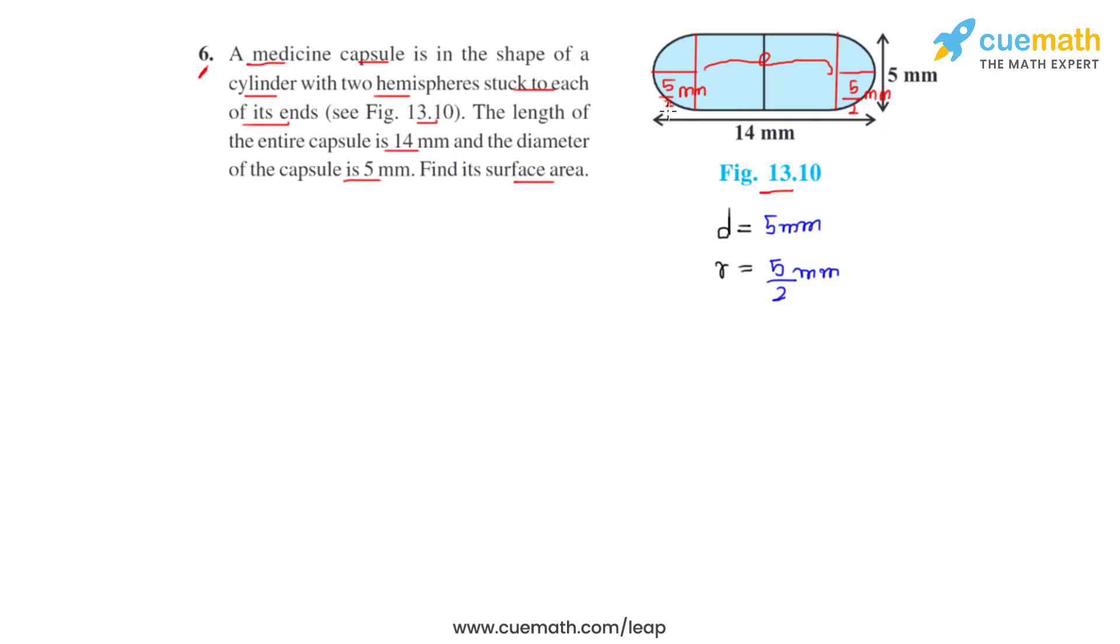So 5 by 2 plus 5 by 2 will be 5. So if we subtract 5 from 14 we get the height of the cylinder as 9. So what we have done is we have subtracted 5 from 14, which is the total length of the capsule, and that gave us the height of the cylindrical part to be 9 mm.